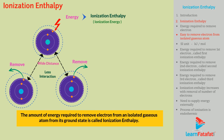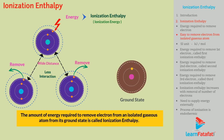The term ground state suggests that electrons in an atom are in the lowest possible energy level. The SI unit for ionization enthalpy is kJ per mole, and it is denoted by delta H.